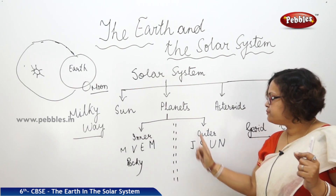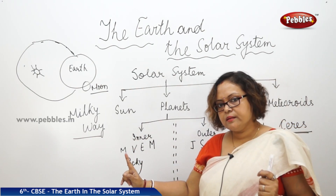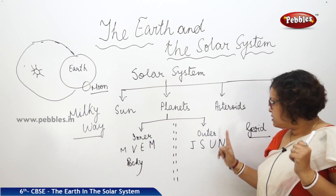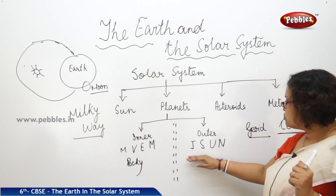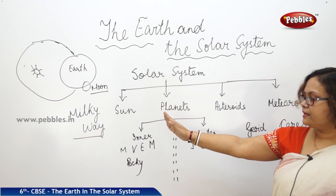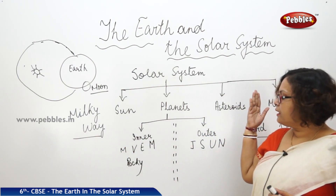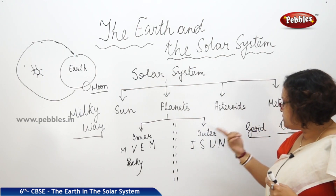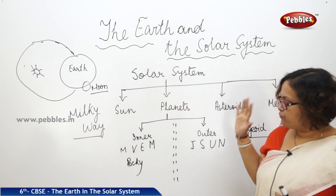Planets are of two types: inner planets and outer planets. Inner planets are rocky; outer planets are gaseous. The inner planets are Mercury, Venus, Earth, and Mars. The outer planets are Jupiter, Saturn, Uranus, and Neptune. The outer planets have their own rings. Some of the bigger planets have their satellites. According to the order from the sun by distance, the planets are: Mercury, Venus, Earth, Mars, Jupiter, Saturn, Uranus, and Neptune.